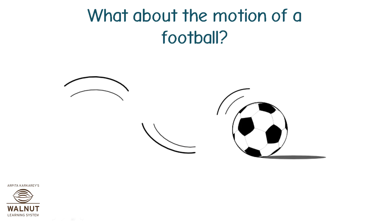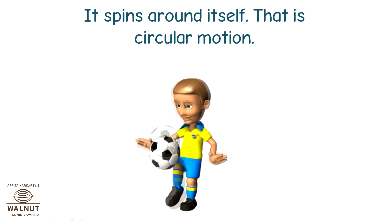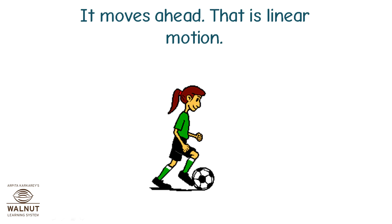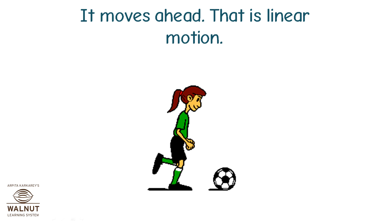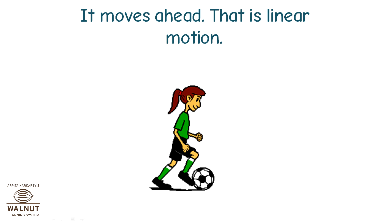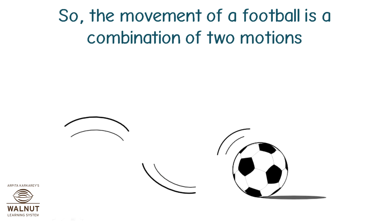What about the motion of a football? It spins around itself, i.e. circular motion. It moves ahead, i.e. linear motion. So, the movement of a football is a combination of two motions — circular and linear.